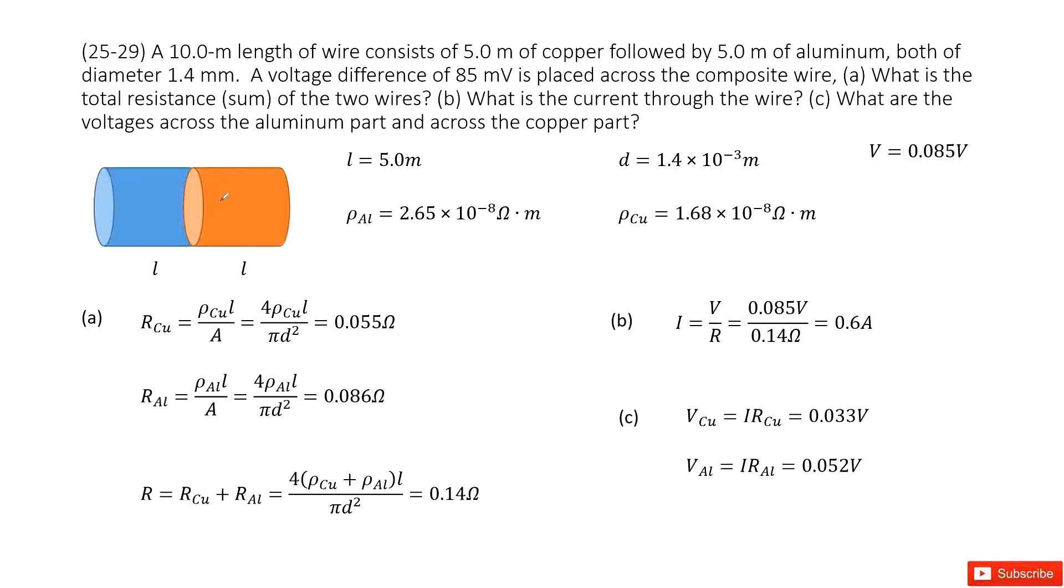So you can see we have the wire consisted of 5 meters of copper and 5 meters of aluminum. This is L, half is L, another half is L. So half is 5 meters.